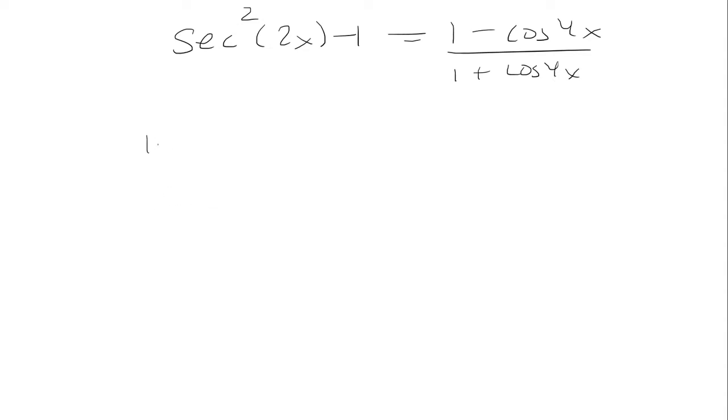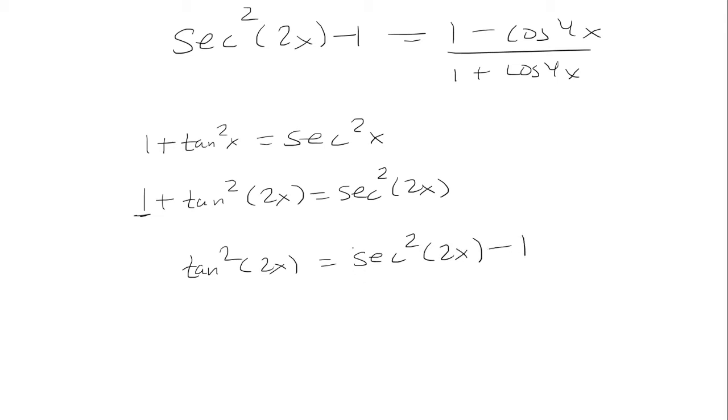So first, I know that 1 plus tangent squared is equal to secant squared. So I can plug in any angle I want, so I'm going to plug in 2x. And I'm going to subtract 1 on both sides. So this one is going to get cancelled, and I'm going to be left with tangent squared 2x equals secant squared 2x minus 1. And notice that's exactly what I have over here.